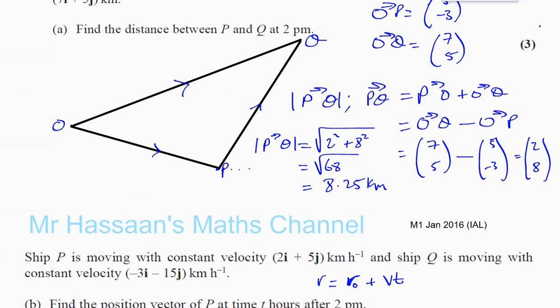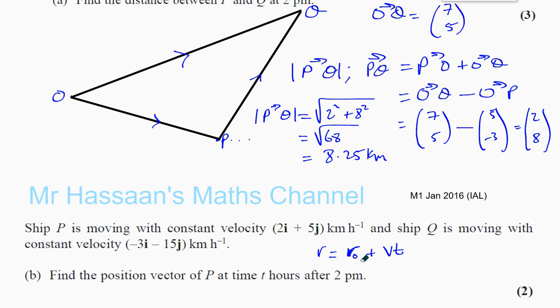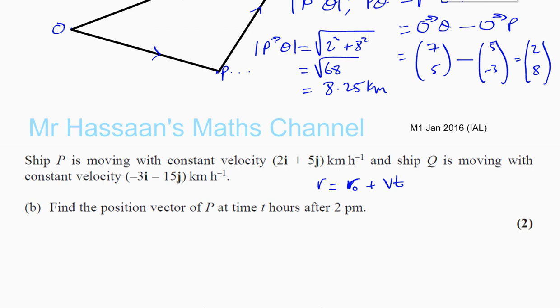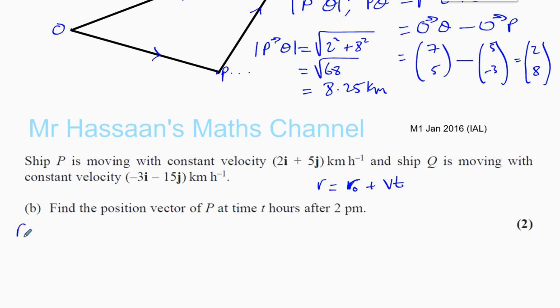As I said, it's the position vector of the ship P at time zero plus the velocity times the time. Time is 1 times 1 velocity, time is 2 times 1 velocity, and so on. It will tell you where it is in relation to the origin. R would be the position vector in relation to the origin for any time you want. You have to plug the time into that equation. So what we need is r0 and v.